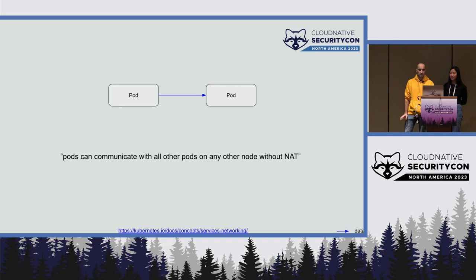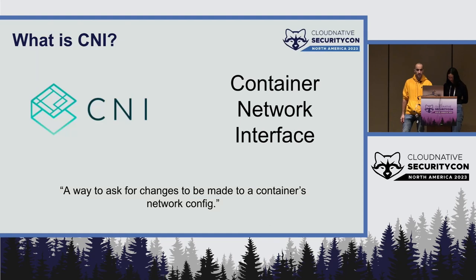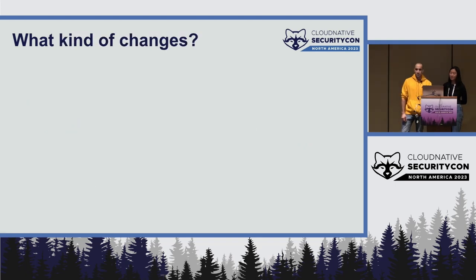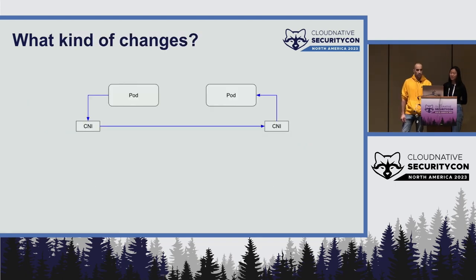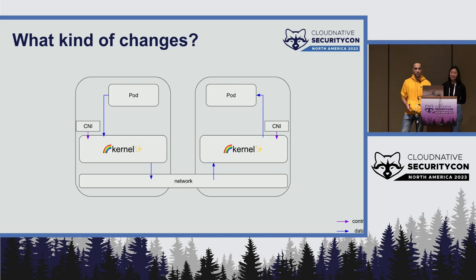The Kubernetes networking model requires that every pod can talk to every other pod directly without NAT. But pods cannot just talk to each other — this needs to be handled by the CNI. CNI is the container network interface, which is basically a thing that lets your container runtime delegate network configuration to some other component. CNI plugins don't implement networking on their own.